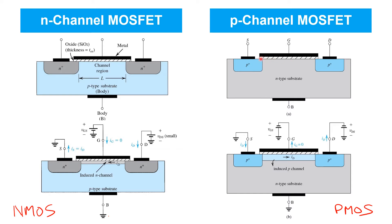In the p-channel MOSFET, the source and drain are p-type, whereas in the n-channel MOSFET they're n-type. So whereas the n-channel MOSFET required a positive gate source voltage in order to invert the channel, the p-channel MOSFET requires a negative gate source voltage. The polarity is flipped in order to attract p-type carriers to the channel region and form an induced p-type channel to allow for conduction between drain and source.